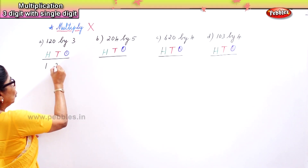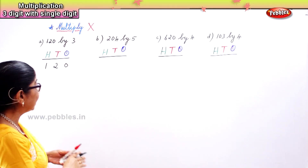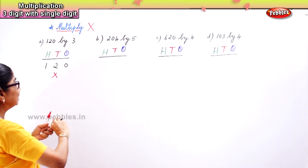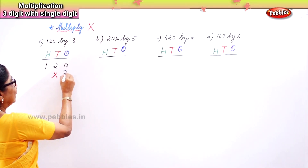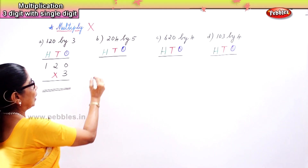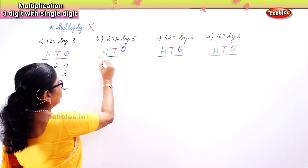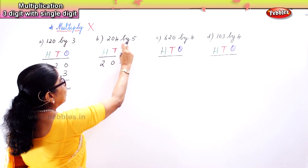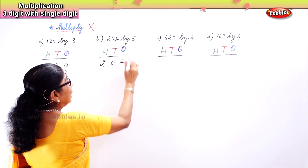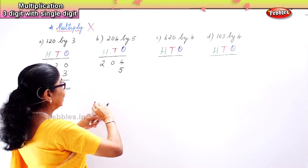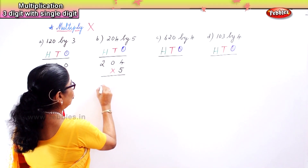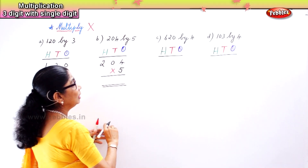120 by 3 — 'by' means multiply. The single digit number 3, that's what it means. Now the next one: 204 by 5 means multiply by 5. The sign 'by' means multiply — we need to know that.